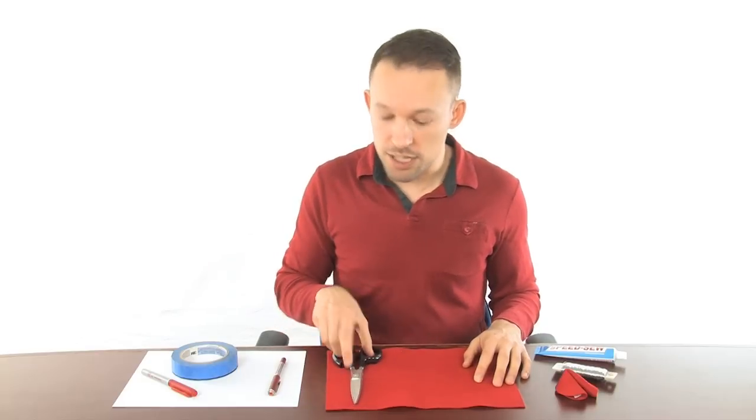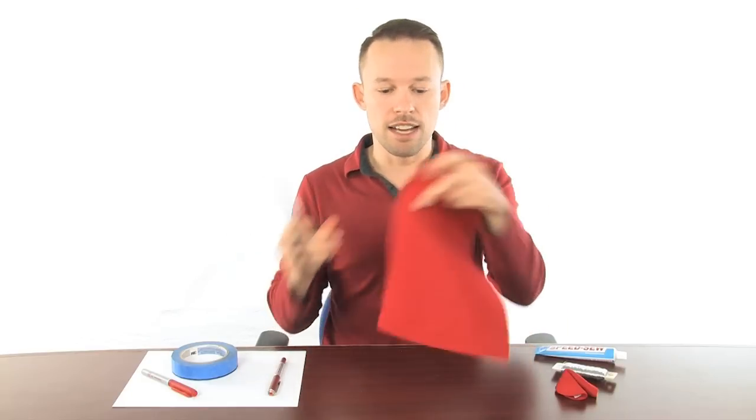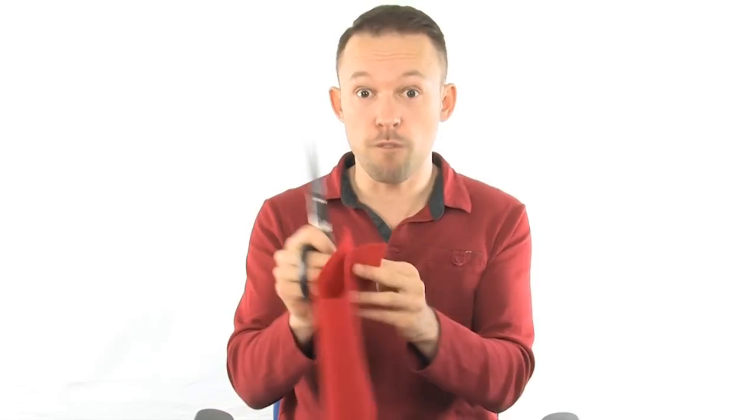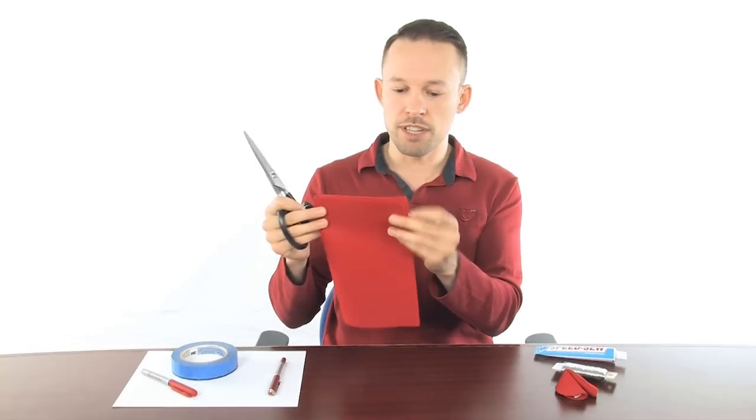So the first thing we're going to do is grab our scissors and our piece of felt. Now this was the size that it was when I went to the craft store, which is actually perfect to give us four circles. So you're just going to fold it in half and cut along the fold, and then fold that again and cut along the fold.